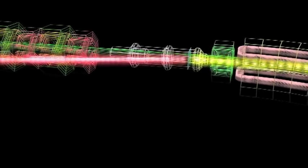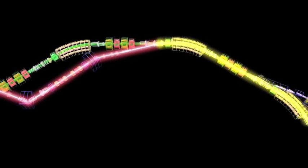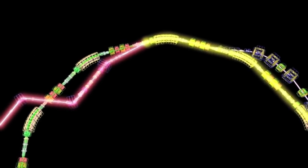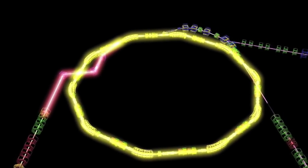The ions are then transported to the third and final accelerator, a circular synchrotron. As they enter, the ions are stripped of their electrons by a thin foil, leaving the bare protons.